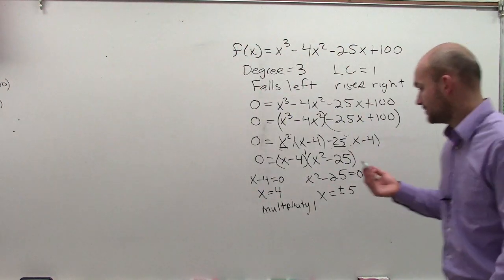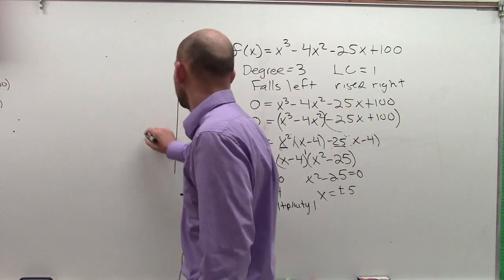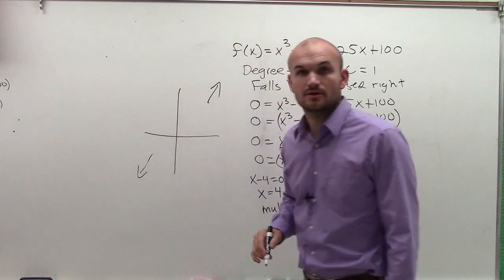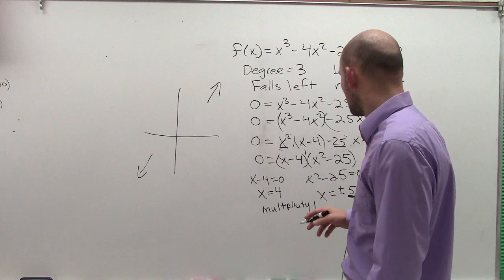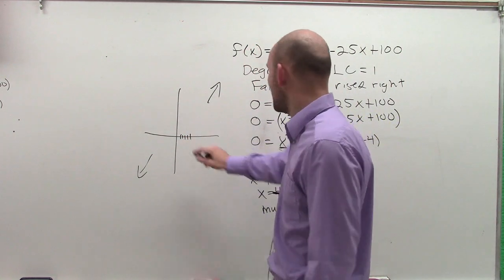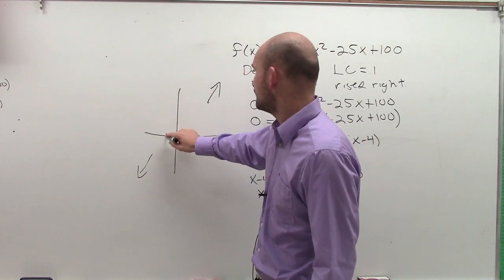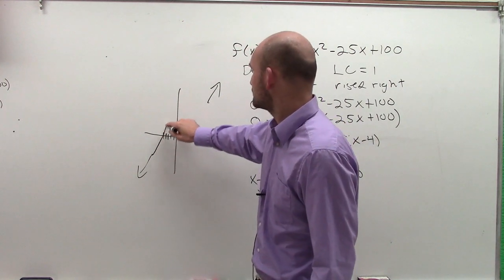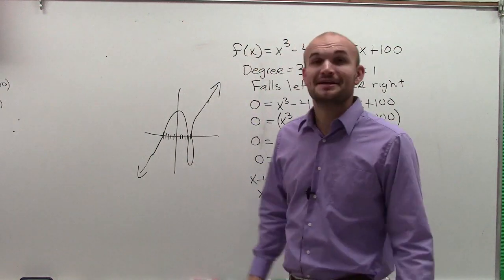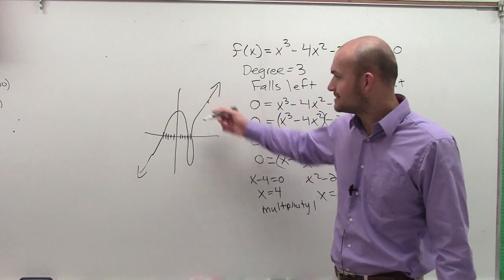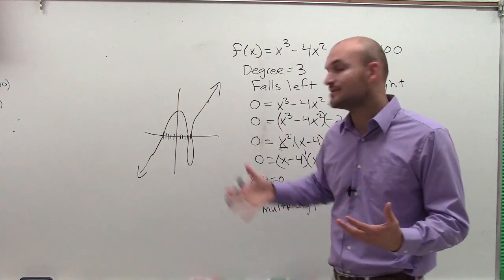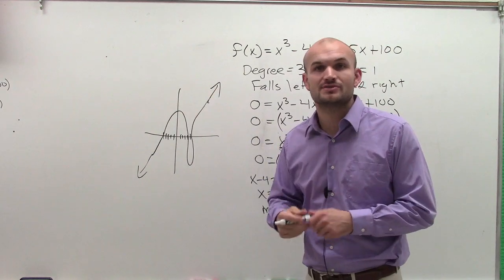Now, if I wanted to graph this real quick, let's just take a look at our end behavior. We said it falls left, rises right, correct? The next thing is we know it crosses at positive 4, positive 5, and negative 5. So we could say it's going to look probably something like that. That's not the prettiest, obviously, graph. But you can kind of see it's important that since it has an odd multiplicity, it's going to cross at each one of the zeros that we determined.